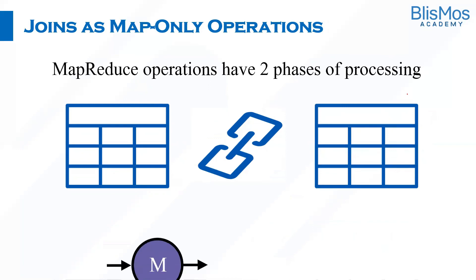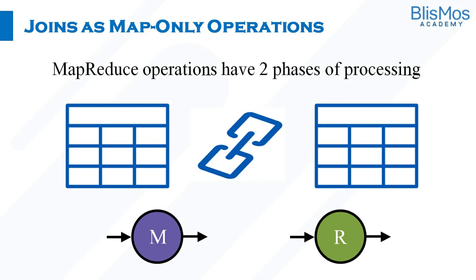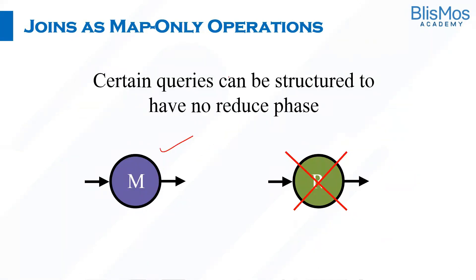MapReduce has two phases: a map phase and a reduce phase. Certain queries can be structured so that there is no reduce phase, saving time. Instead of running both map and reduce operations, we can complete the work by doing map-only jobs. That concludes our discussion of how to optimize queries in Hive in different ways.